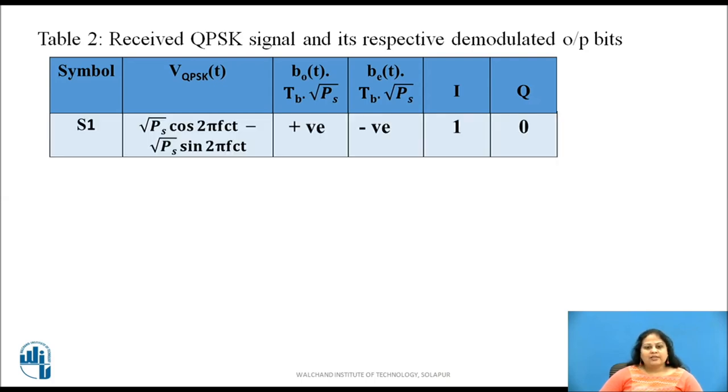When symbol s1 is received, VQPSK of t is equal to root of ps cos 2 pi fct minus root of ps sin of 2 pi fct. This makes the output of in-phase channel integrator as positive and the output of quadrature phase channel integrator as negative, decoding the bits as 1 and 0 respectively.